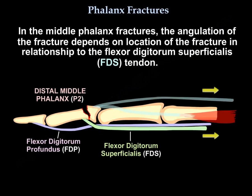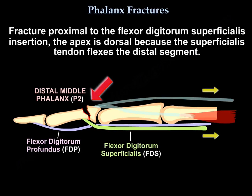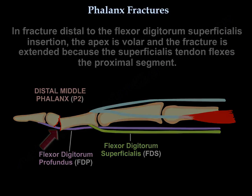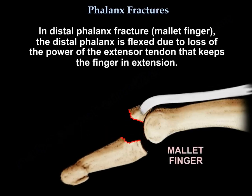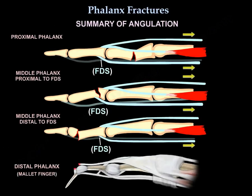In middle phalanx fractures, the angulation depends on the location of the fracture in relationship to the flexor digitorum superficialis tendon. For fractures proximal to the superficialis insertion, the apex is dorsal because the superficialis tendon flexes the distal segment. For fractures distal to the superficialis insertion, the apex is volar because the superficialis flexes the proximal segment. In distal phalanx fractures — mallet finger — the distal phalanx is flexed due to loss of the extensor tendon that keeps the finger in extension.